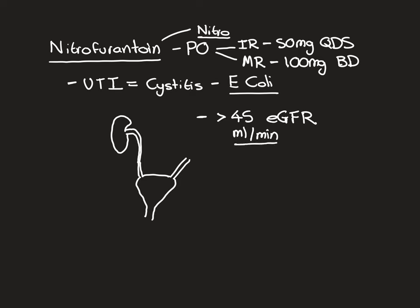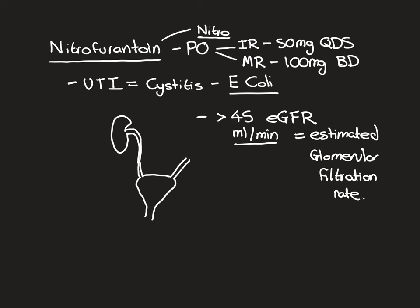eGFR stands for estimated glomerular filtration rate. This is something that we can't actually measure directly, so instead we estimate it — that's what eGFR is. You have two kidneys, and blood is going through both of them all the time, with loads of little nephrons and their glomeruli.